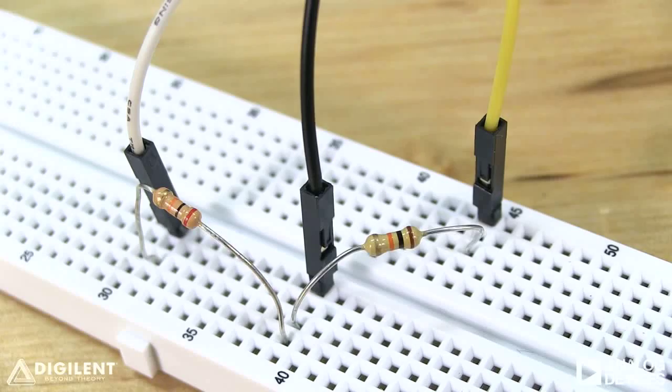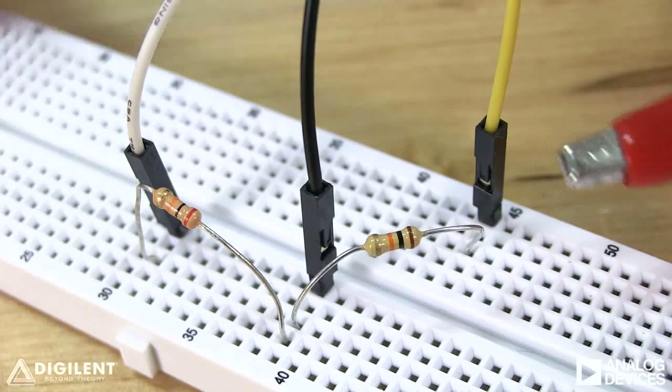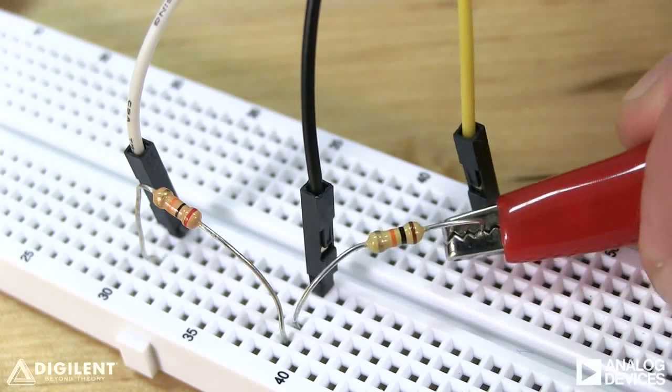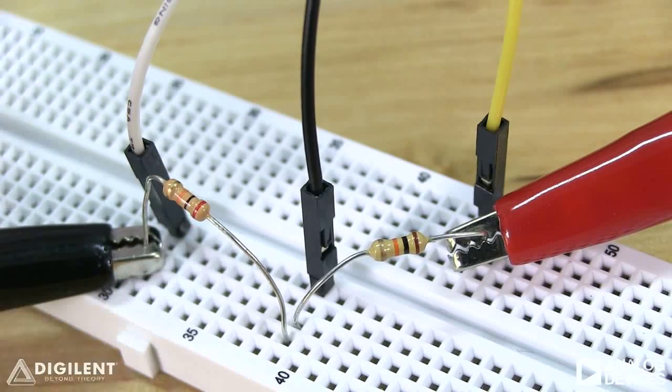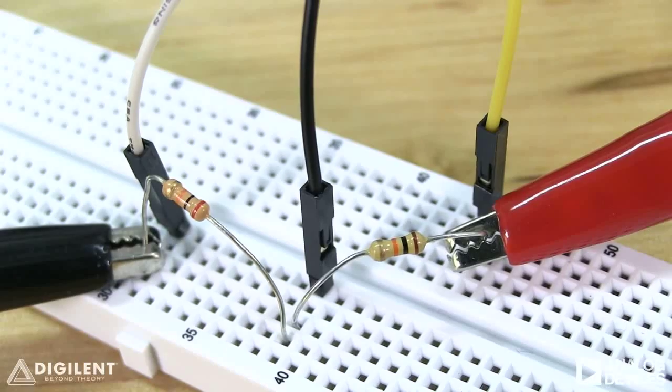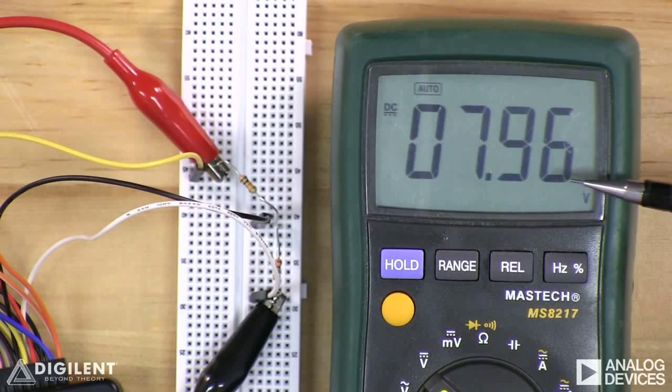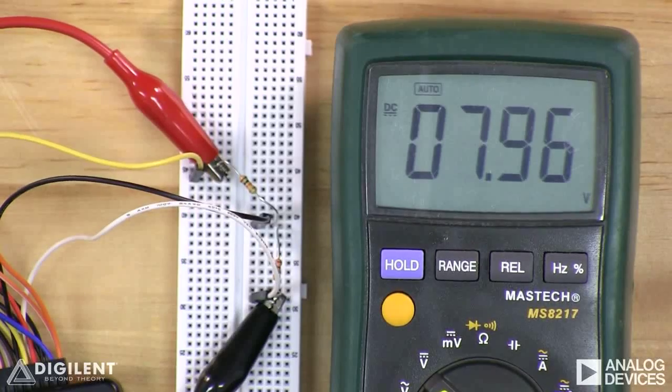To measure the voltage VBA, we connect the positive terminal of our DMM to this terminal and the negative terminal of our DMM to this terminal. And as you can see, we get an approximately 8 volt difference between nodes B and A.